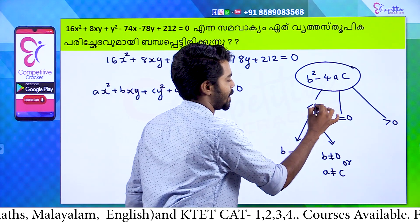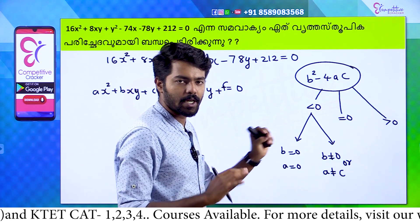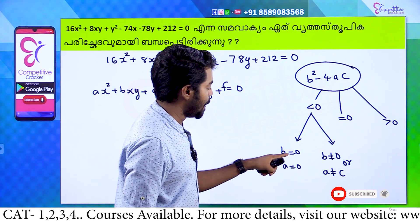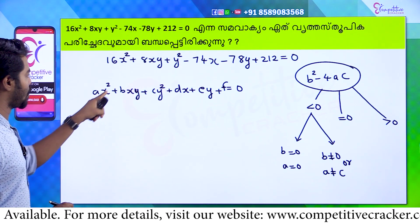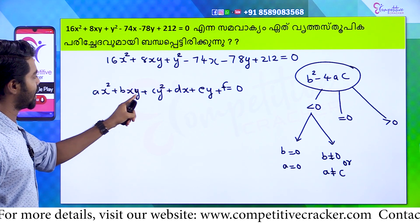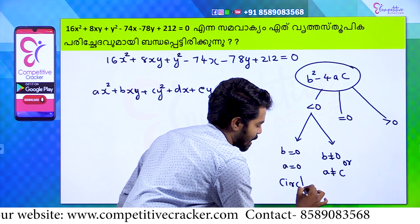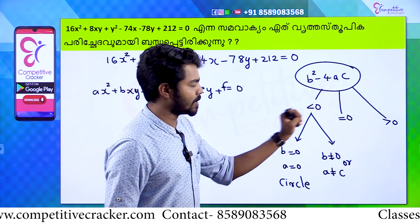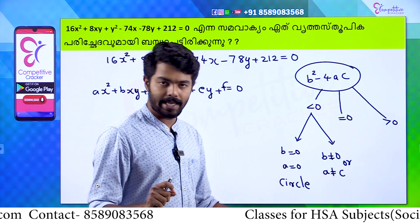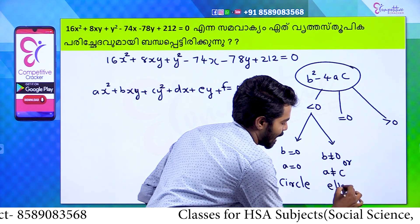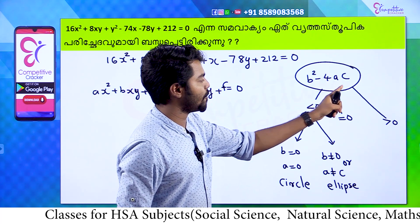The discriminant is b² − 4ac. Now, if b² − 4ac is less than 0, we have two conditions: if b = 0 and a equals the coefficient of x², then the equation is a circle. If the answer is a negative number with b = 0 or a ≠ coefficient, we say that equation is an ellipse. If b² − 4ac equals 0, the conic is a parabola.